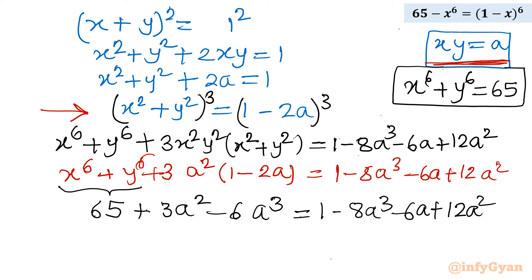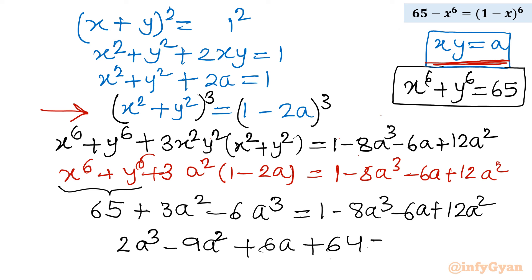Taking all terms to one side, this cubic equation becomes 2a³ minus 9a² plus 6a plus 64 equal to 0. This is our cubic equation in a.